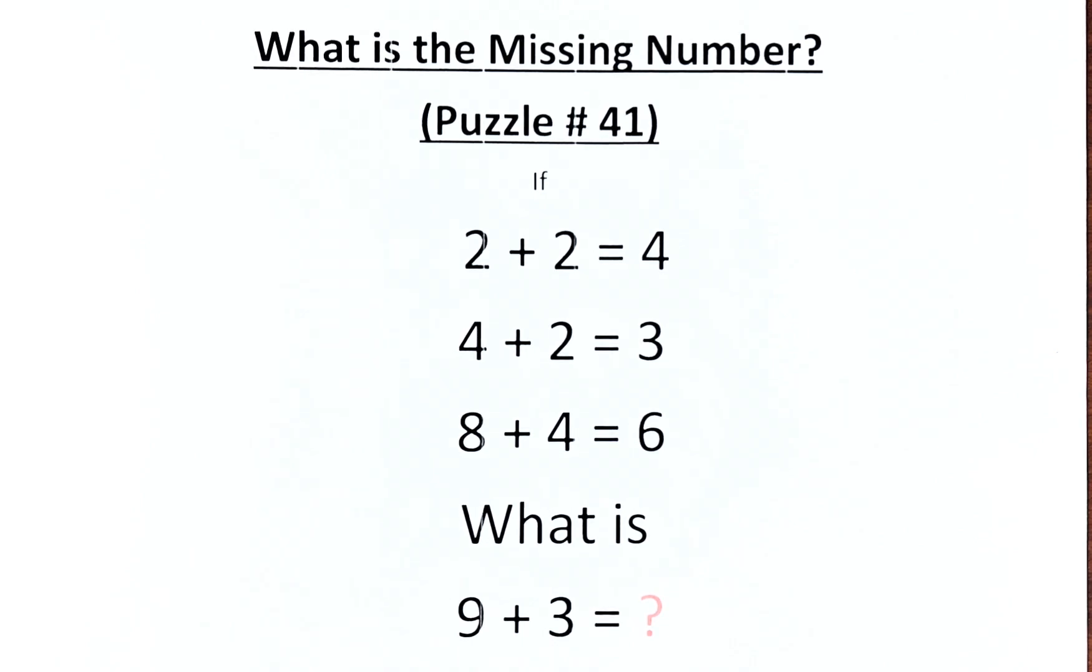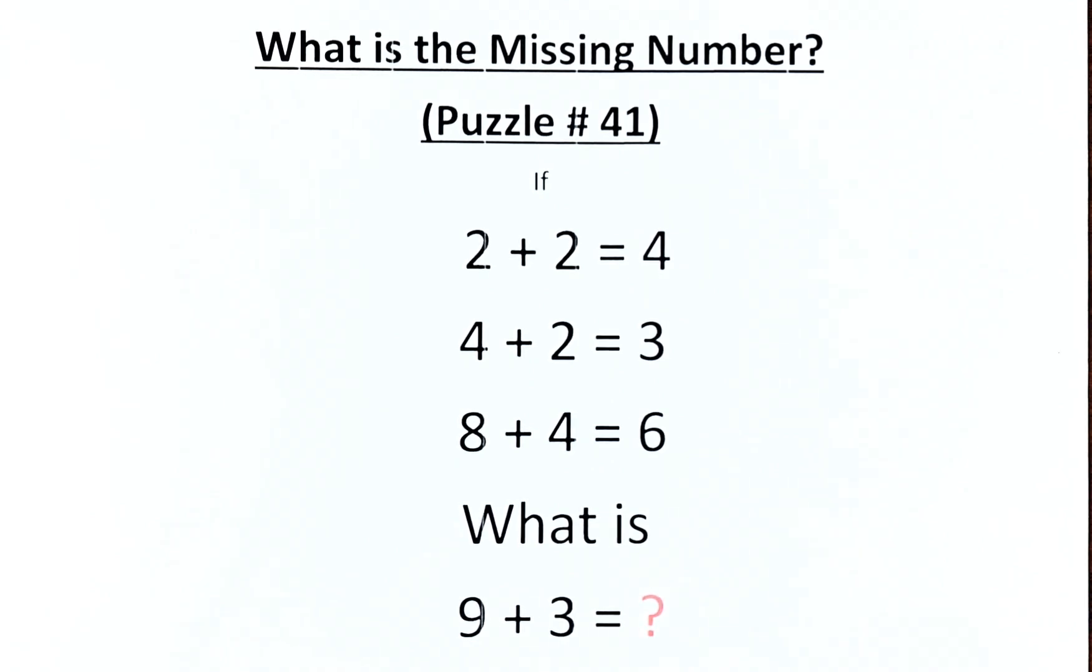Welcome back to the solution of puzzle number 41. What is the missing number in this puzzle? The question is, if 2 plus 2 equal to 4, 4 plus 2 equal to 3, 8 plus 4 equal to 6, what then is 9 plus 3 equals to?